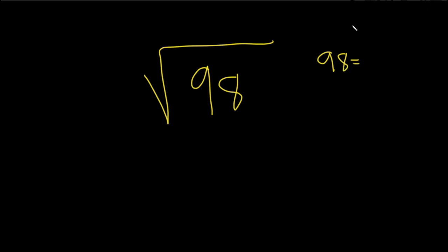So what is the largest factor of 98 that you can take the square root of? Well, this one's actually not so bad, because you can write this as 2 times 49. And the square root of 49 is 7, so that'll actually do it.